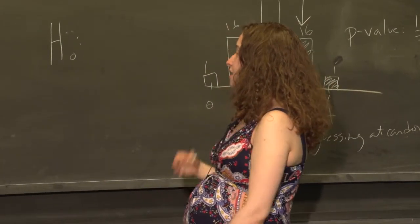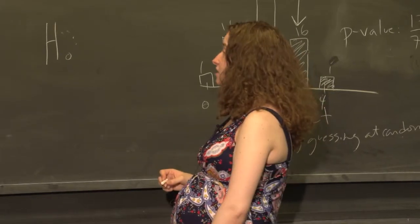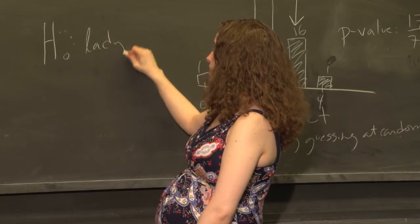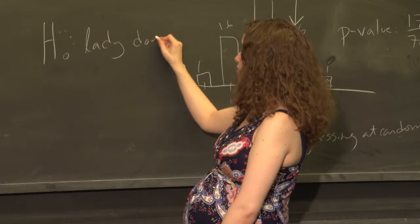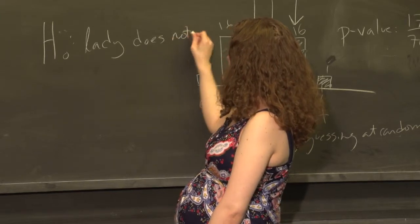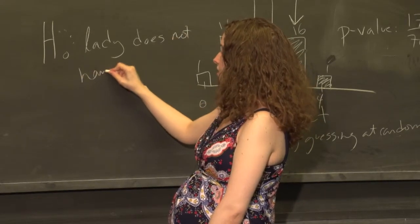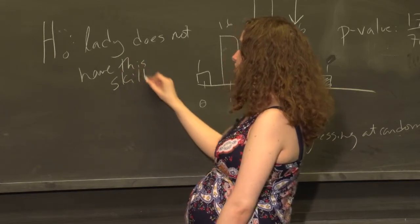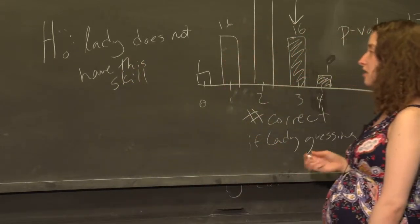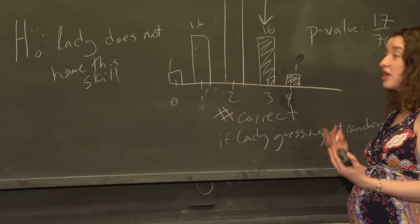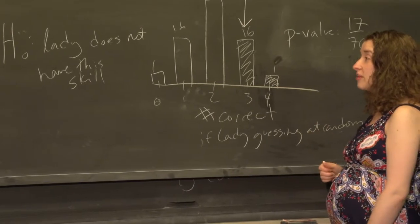We write the null hypothesis either in English or using mathematical terms. We might say something like, the null hypothesis is that the lady does not have this skill. She does not have the skill of distinguishing between these two types of cups. We come up with a null hypothesis, an assumption that there's actually nothing real going on here, no real pattern.